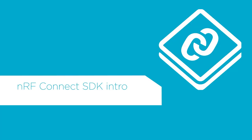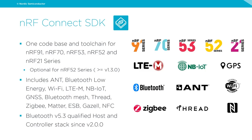A quick intro to the NRF Connect SDK: it is one code base and toolchain for the NRF91 series, NRF70 series, NRF53, NRF52, and NRF21 series. It is optional for the NRF52 series as of version 1.3.0. It includes ANT, Bluetooth Low Energy, Wi-Fi, LTE-M, Narrowband IoT, GNSS, Bluetooth Mesh, Thread, Zigbee, Matter, ESP, Gazelle, and NFC — all protocols we support.